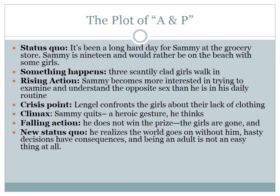Here's the plot of A&P. The status quo: it's been a long, hard day for Sammy; he's 19 and would rather be at the beach. Then something happens — three scantily clad girls walk in. Sammy becomes more interested in examining the opposite sex than in doing his routine. The crisis point: L'Engle confronts the girls about their lack of clothing. Climax: Sammy quits — a big heroic gesture he thinks. The girls don't care at all. Following action: the girls are gone, and Sammy realizes the world goes on without him. New status quo: he realizes that hasty decisions have consequences and that being an adult is not easy.